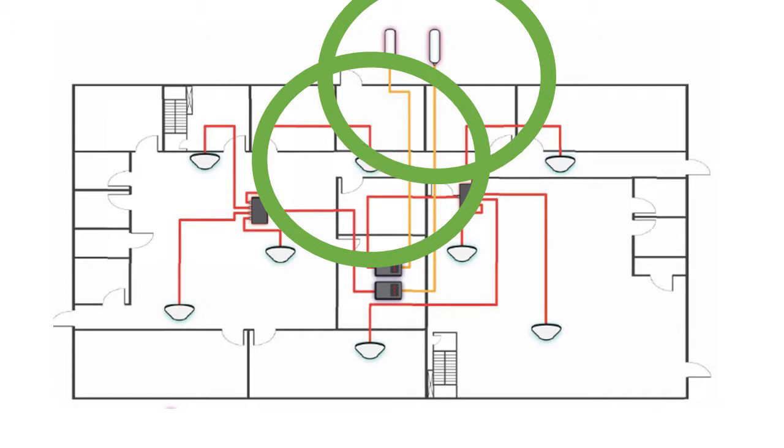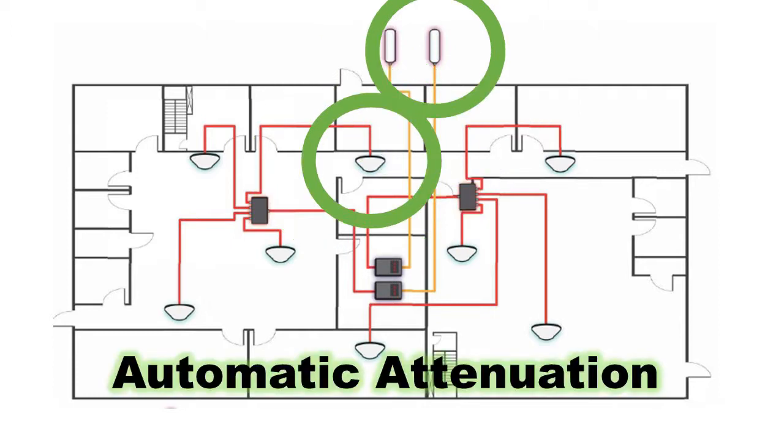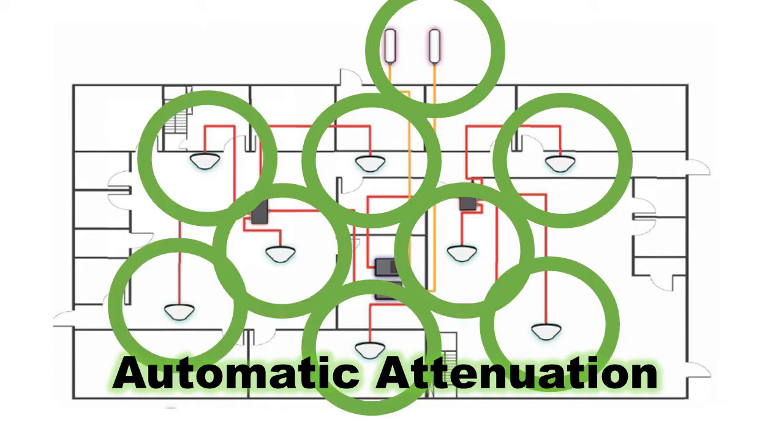When the booster automatically adjusts attenuation, both the outside donor antenna and inside broadcast antenna attenuate in equal amounts. This is great for ease of install but may affect coverage as all of the antennas inside will be equally affected.